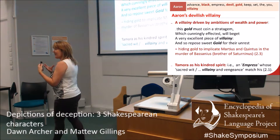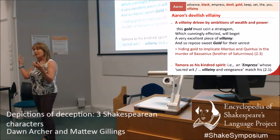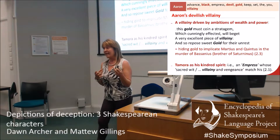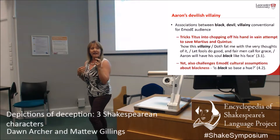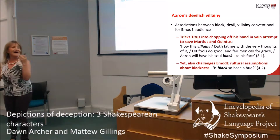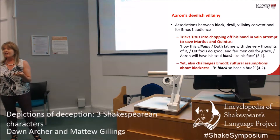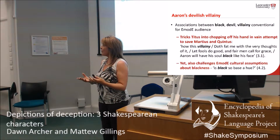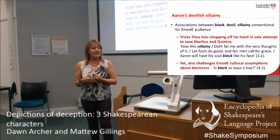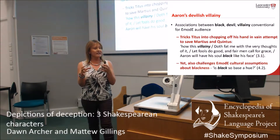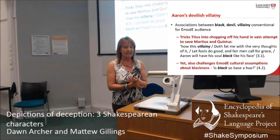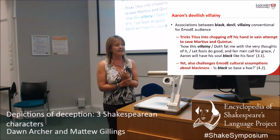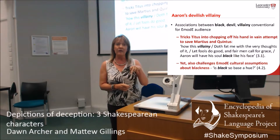Tamora is an empress — which is why empress is a keyword for him — and he talks about her having a sacred wit, and villainy and vengeance that match his. He's supposed to be an archetype of a villain, and he's black, and for all those reasons we look at him as quite a traditional character. But how he interacts with others suggests he's a little more complex. It'd be really easy to look at these keywords and think the associations between black, devil, and villainy are conventional — what early modern English audiences would have thought at the time. And there are points at which he is very archetypal: he tricks Titus into chopping off his hand in a vain attempt to save Martius and Quintus, who we already know Aaron has set up.